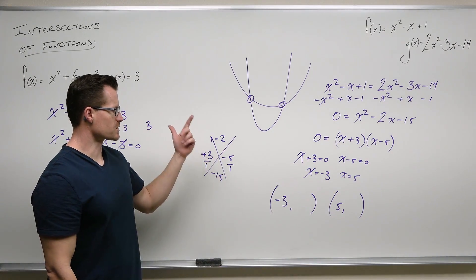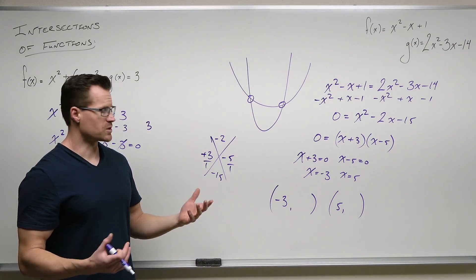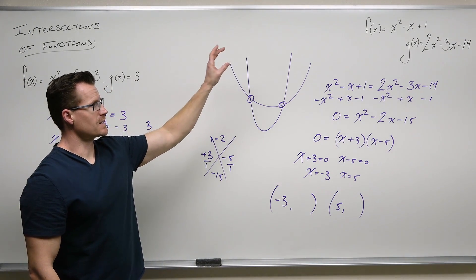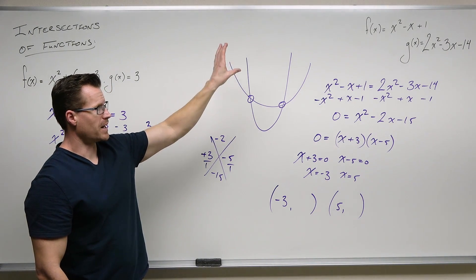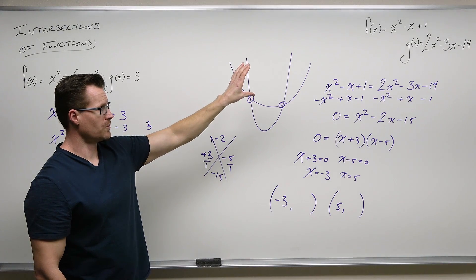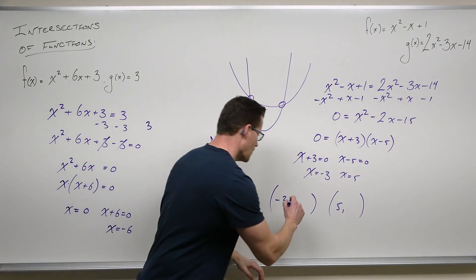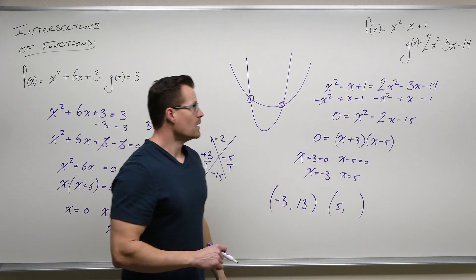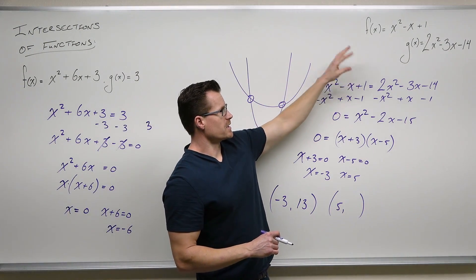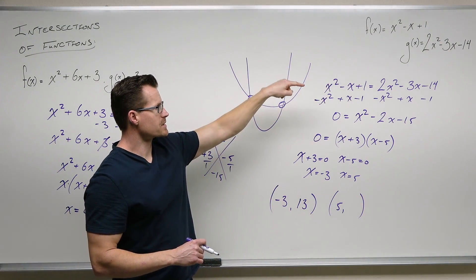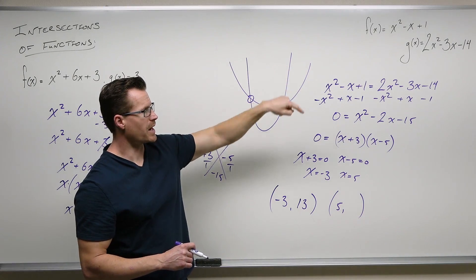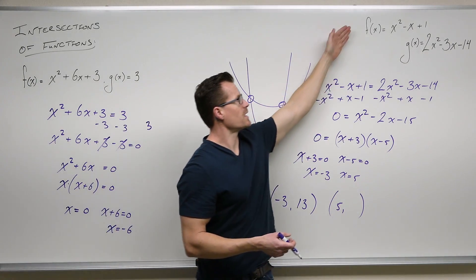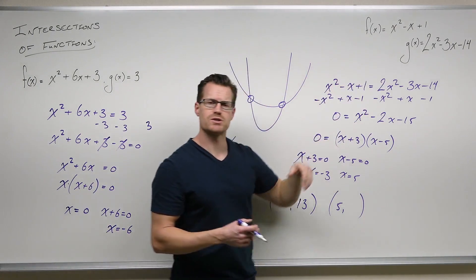We're going to do both functions just to make sure we're right. Negative 3 squared gives you 9, 9 minus negative 3 is 9 plus 3 is 12, and 12 plus 1 is 13. Now checking the other function: 3 squared is 9, 9 times 2 is 18, 18 plus 9 is 27, and 27 minus 14 is 13. So negative 3 in both of my functions gives me 13 — that verifies that this is a point of intersection.